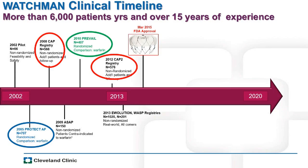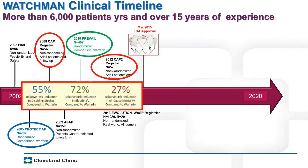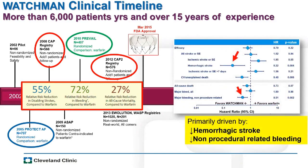In totality, these studies have shown that the Watchman device, compared to warfarin, is associated with a 55% reduction in disabling strokes and a 27% reduction in all-cause mortality. The reduction in mortality is predominantly driven by a reduction in hemorrhagic stroke and a reduction in major non-procedural bleeding — because patients are not taking oral anticoagulants over that period of follow-up.